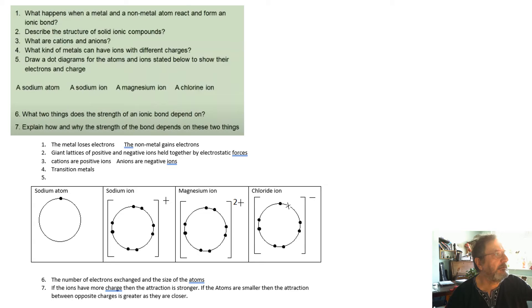The strength of an ionic bond depends on the number of electrons exchanged and the size of the atoms. If the ions have exchanged more electrons, then the bond is stronger. If the atoms are smaller, then the opposite charges are closer together, so the bond is stronger.